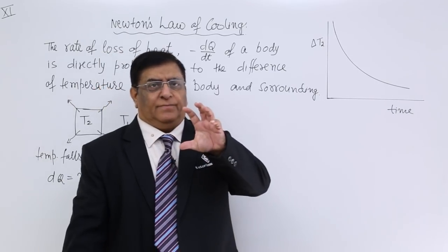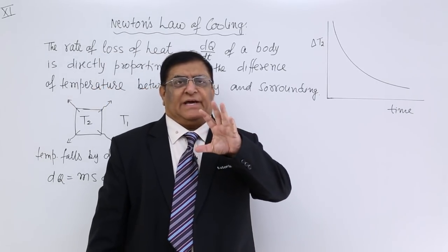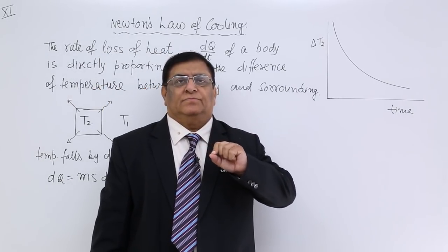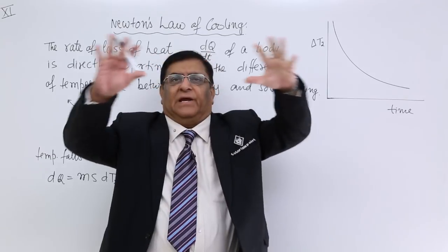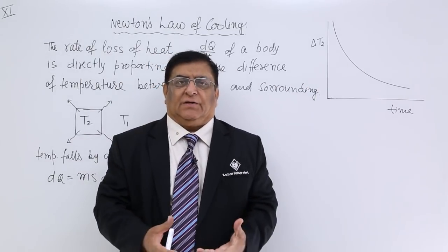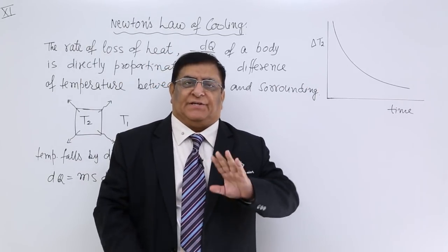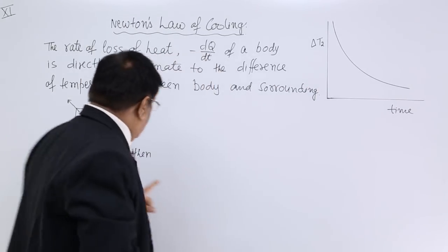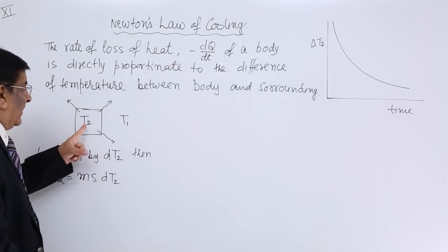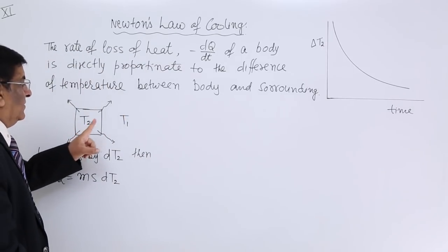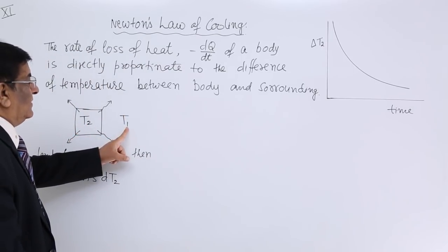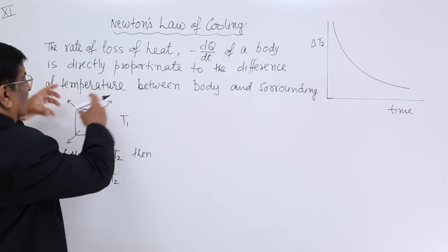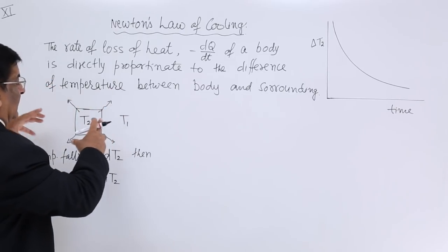There is a hot body which has a temperature T2 kept in an atmosphere, and the surrounding has a lower temperature T1. Then the hot body will be radiating out heat.